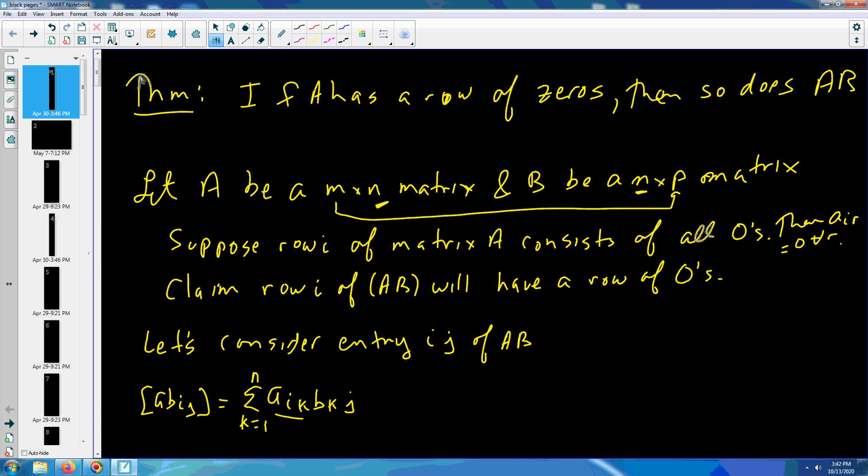a_i1 is zero, a_i2 is zero, I'm changing the Ks, a_i3 is zero. So this is the summation as k goes from 1 to N of zero times b_kj.